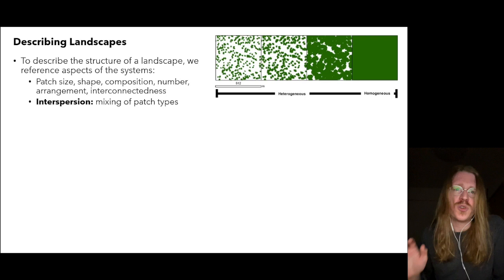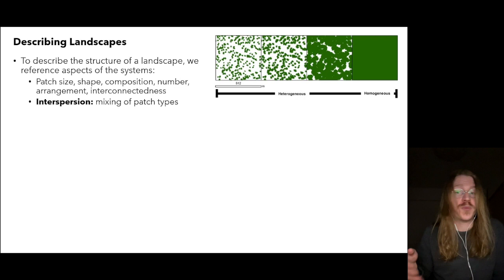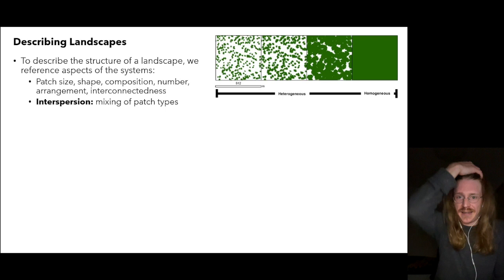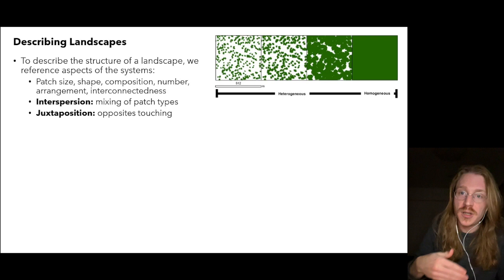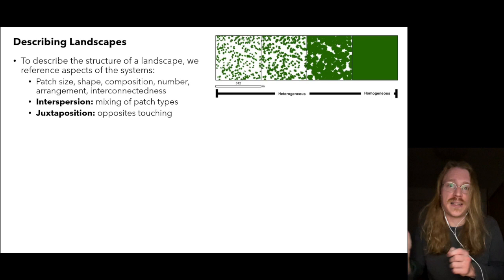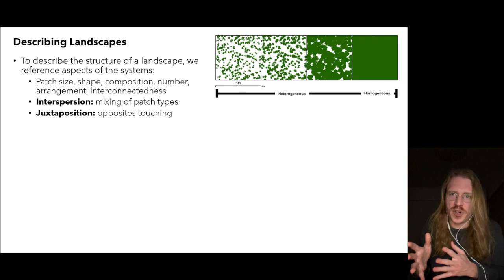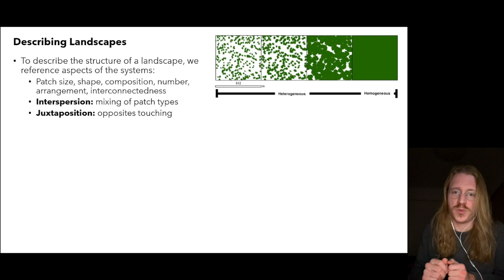Interspersion refers to the degree that different patches are mixed together — is the arrangement more random and interspersed, or is there some clustering? Next, we have juxtaposition, which takes into account the composition of neighboring patches. Are patches adjacent to similar habitats, like a forest next to a forested wetland, or are neighboring patches very different from each other, like a forest next to row crops?